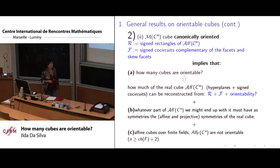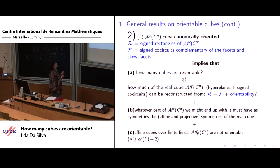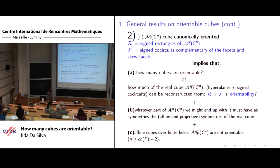The second consequences of these general results are that because every orientable matroid, orientable cube will have a canonical orientation, whenever we can start thinking about an orientable cube oriented with canonical orientation, we know a little bit of its family of circuits and of its family of co-circuits, which are the signed rectangles and the signed co-circuits complementary of the facets and skew facets, which are signed as in the real case.